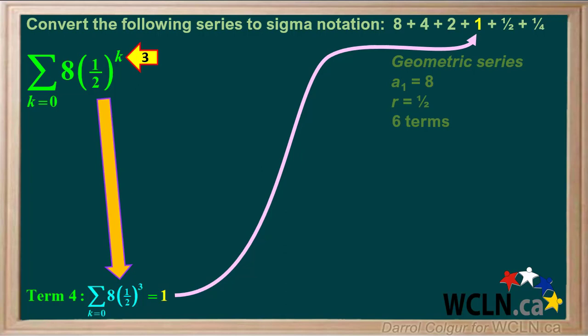If you check, you'll see that for term 5, if k is 4, you would get 1 half as a value for the term, and that for term 6, if k is 5, you would get 1 quarter as a value for the term.